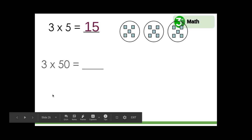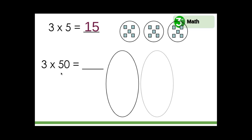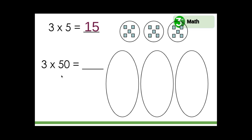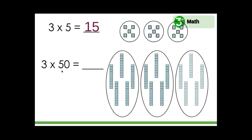What about three times fifty? We can also show three loops, but instead of adding five ones, we will add five tens. Now how many are there?